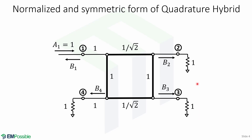Here is the normalized and symmetric form of the Quadrature-Hybrid, where each line represents a transmission line with its characteristic impedance normalized to Z0, as we did with the Wilkinson power divider in the previous lecture. We will assume that a wave of unit amplitude A1 equals 1 is incident at port 1. We define B1 as the amplitude of the reflected wave at port 1, B2 at port 2, B3 at port 3, and B4 at port 4. We will decompose this circuit into the superposition of an even mode excitation and odd mode excitation, and since the circuit is linear, the actual scattered waves will be obtained from the sum of the responses to the even and odd mode excitations.